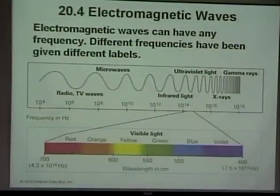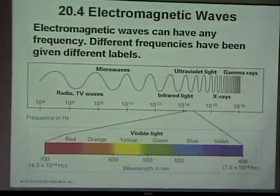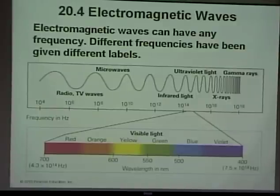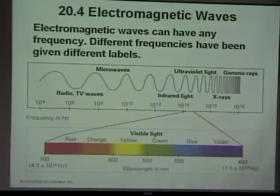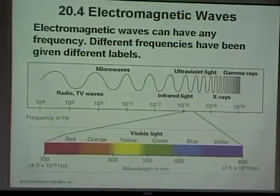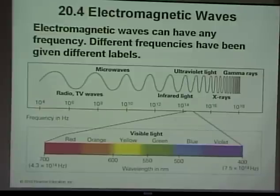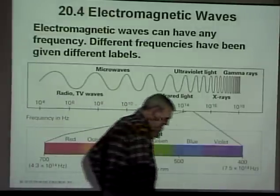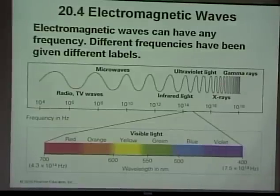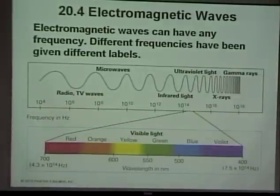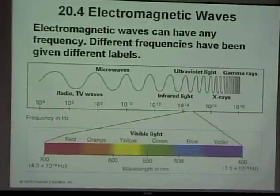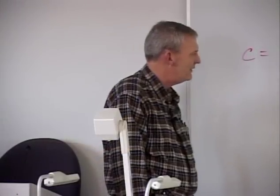As we go further up the spectrum we get ultraviolet light, gamma rays, and X-rays, which can be very harmful because their high frequency can disrupt your cell structure. Electromagnetic waves radiate through space, pass through things, and dissipate as you get farther from the source.